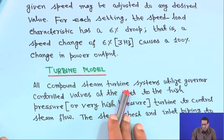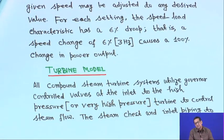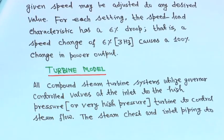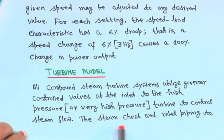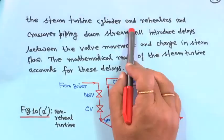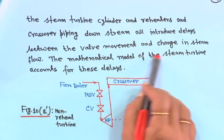All compound steam turbine systems utilize governor control valves at the inlet to the high pressure or very high pressure turbine, because a turbine has different sections: high pressure, intermediate pressure, and low pressure. We will represent them using Laplace transform and block diagram representation. The valve mechanism for a steam turbine has different sections, and for simplicity we will take the simplest model. The steam chest, inlet piping, reheaters, and crossover piping all introduce delays between valve movement and change in steam flow.